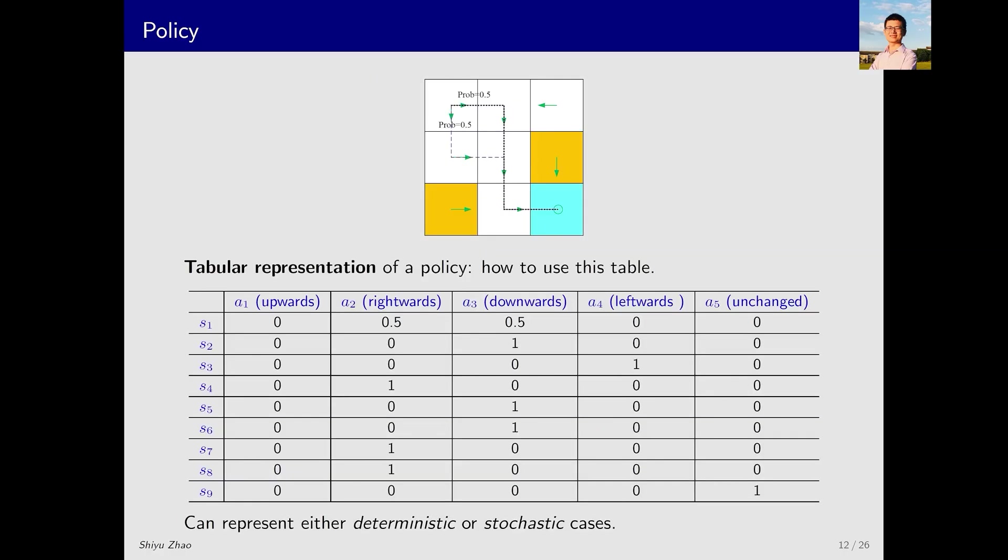This policy can also be expressed in a tabular form, where each row corresponds to a state and each column corresponds to an action. For example, let's consider state S5, where the probability of taking the action to move down is 1. Thus, for S5, the policy is deterministic. However, for S1, there is a 0.5 probability for action A2 and a 0.5 probability for action A3. So the policy for S1 is stochastic. This tabular representation is very general and can describe both deterministic and stochastic policies. In programming, we typically represent such policies using arrays or matrices.